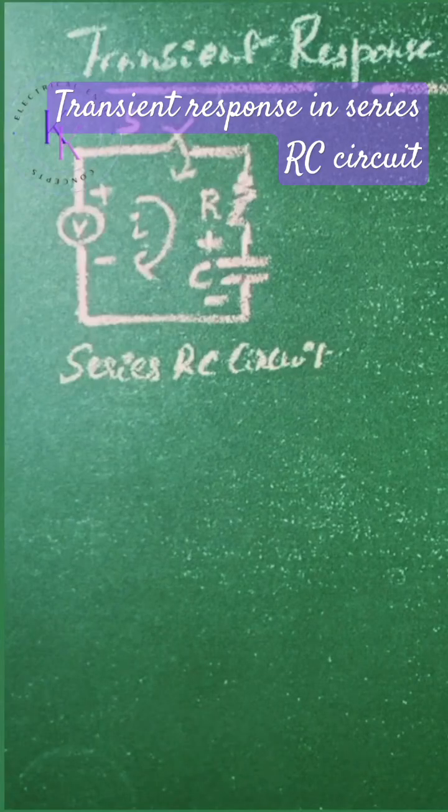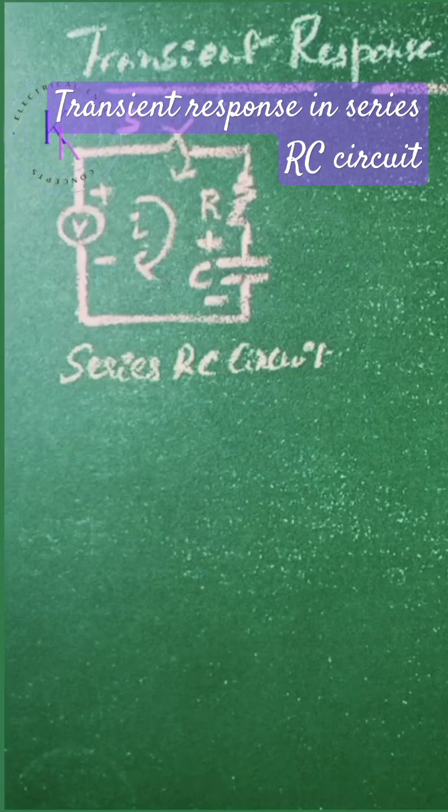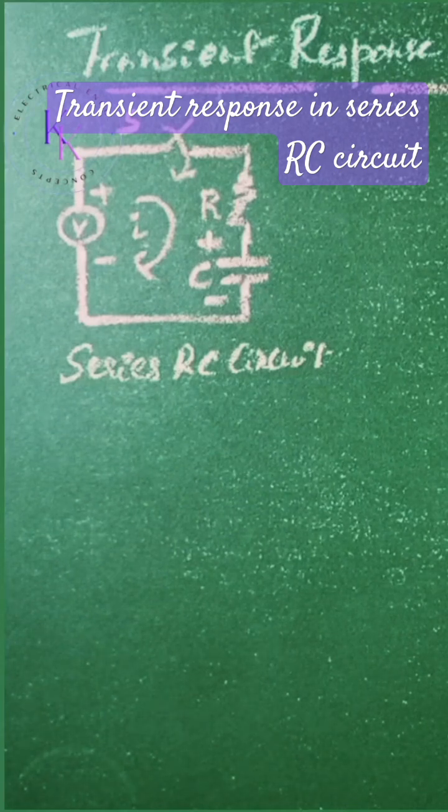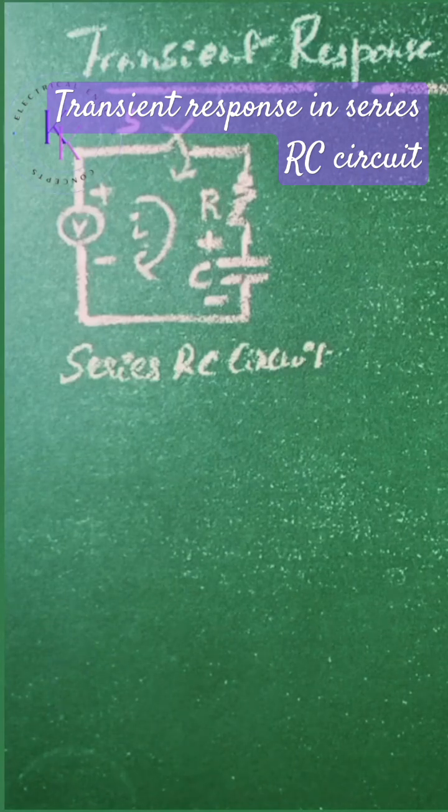Transient response in RC series circuit having DC excitation. Let a DC voltage V be applied at t equals 0 by closing the switch S in a series RC circuit.